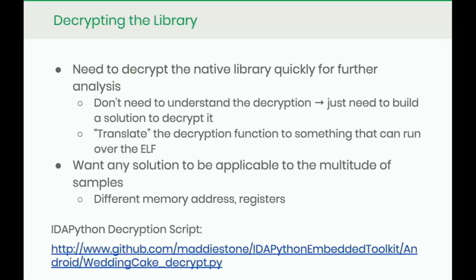The key is I needed a solution that was fast and flexible, because I'm still trying to decide whether to start alerting users, and I knew there were at least a hundred other samples out there each compiled differently. My key thoughts: one, I don't need to fully understand the decryption algorithm — I just need something that runs over it and decrypts it so I can analyze the contents. Second, I needed it to be flexible so I didn't have to copy-paste or rewrite it with different memory addresses and registers for each new sample.